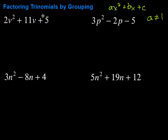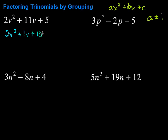So for this first example, we take a times c, so we have two times five, which is ten. So I'm looking for factors of ten that add up to eleven. Those factors of ten that add up to eleven will be one and ten. So let's break this eleven V up into one and ten. We're going to write two V squared plus one V plus ten V plus five.